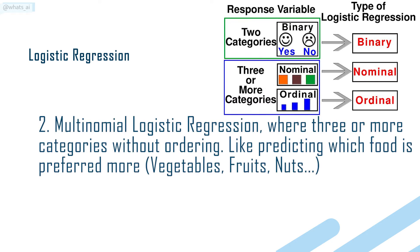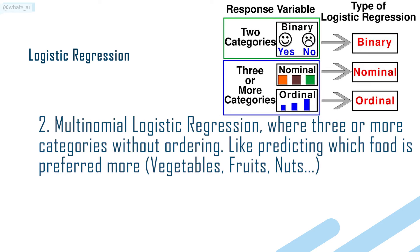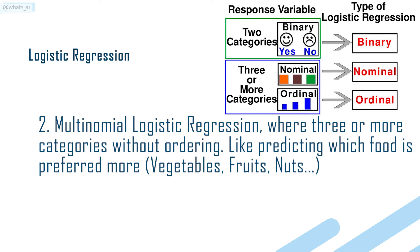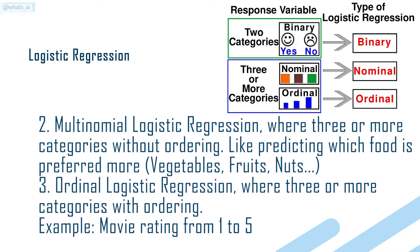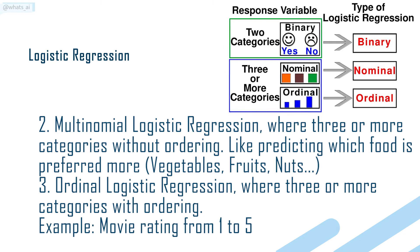Multinomial logistic regression covers three or more categories without ordering — like predicting which food is preferred more: vegetables, fruits, or nuts. Ordinal logistic regression covers three or more categories with ordering — for example, a movie rating from 1 to 5.